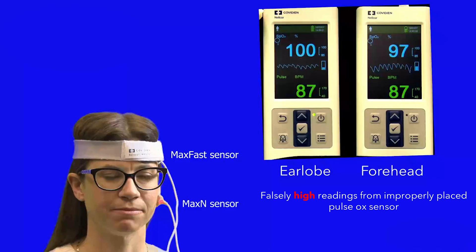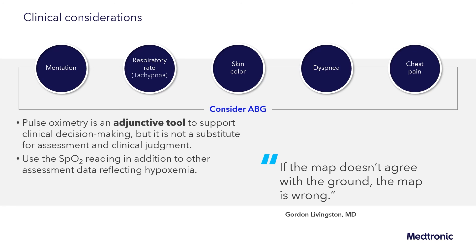We must remember that the pulse oximeter is an adjunctive tool that supports our clinical decision-making, but is no way a substitute for assessment and clinical judgment, and that we need to use the pulse oximetry reading in addition to other assessment data that may reflect the patient's hypoxemia. Some of the clinical findings which we may see, such as change in mentation, respiratory rate in the way of tachypnea, change in skin color, dyspnea, and chest pain, may point us in a direction contrary to what the pulse oximeter is telling us.